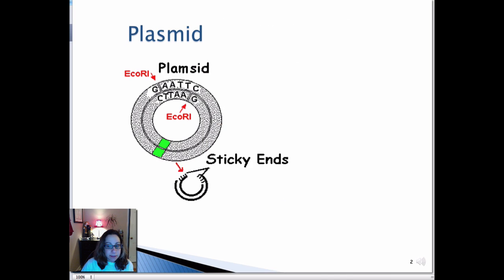Now the plasmid, as you can see, is a circular, double-stranded piece of DNA that is very commonly found in bacterial cells.